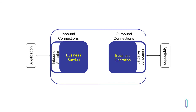Which technology is used by the business service or business operation depends on the sending or receiving applications. One of the most popular technologies used to send data, especially in healthcare, is TCP. A business service can be used to connect to and accept data from a system sending via TCP. A business operation can connect to a receiving system and send data via TCP. As REST and SOAP web services continue to grow in popularity, REST and SOAP business services and business operations will become more common.